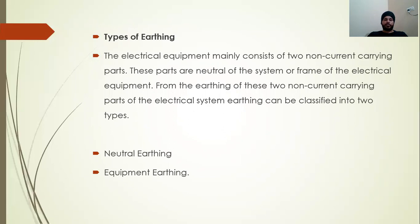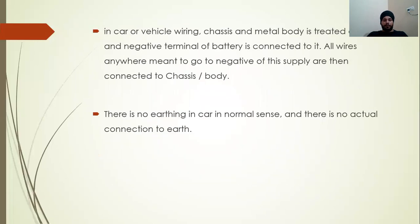Equipment arthing means if any part of an equipment is not properly grounded, we connect that part directly with a black wire to earth. In a vehicle, the chassis and metal frame of the vehicle are considered as the earth.